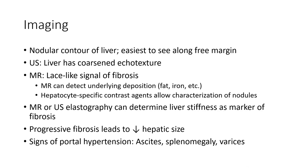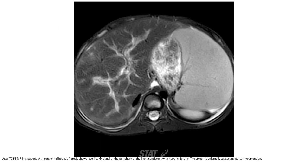Signs of portal hypertension include ascites, splenomegaly, and varices. T2-weighted MRI in a patient with congenital hepatic fibrosis shows lace-like increased signal at the periphery of the liver, consistent with hepatic fibrosis. The spleen is enlarged, suggesting portal hypertension.